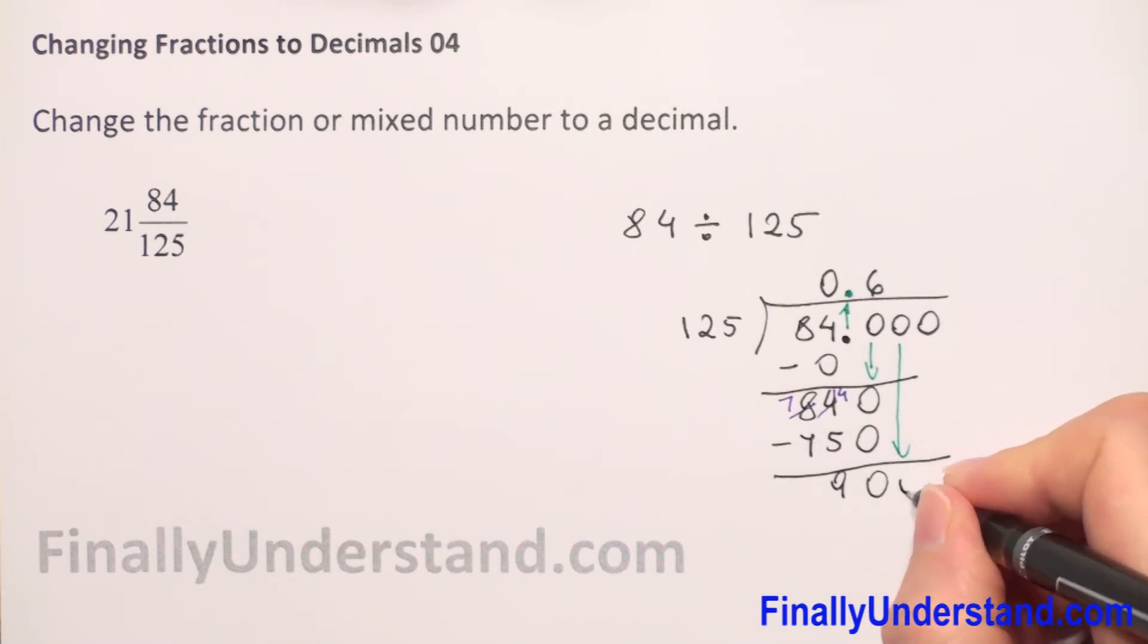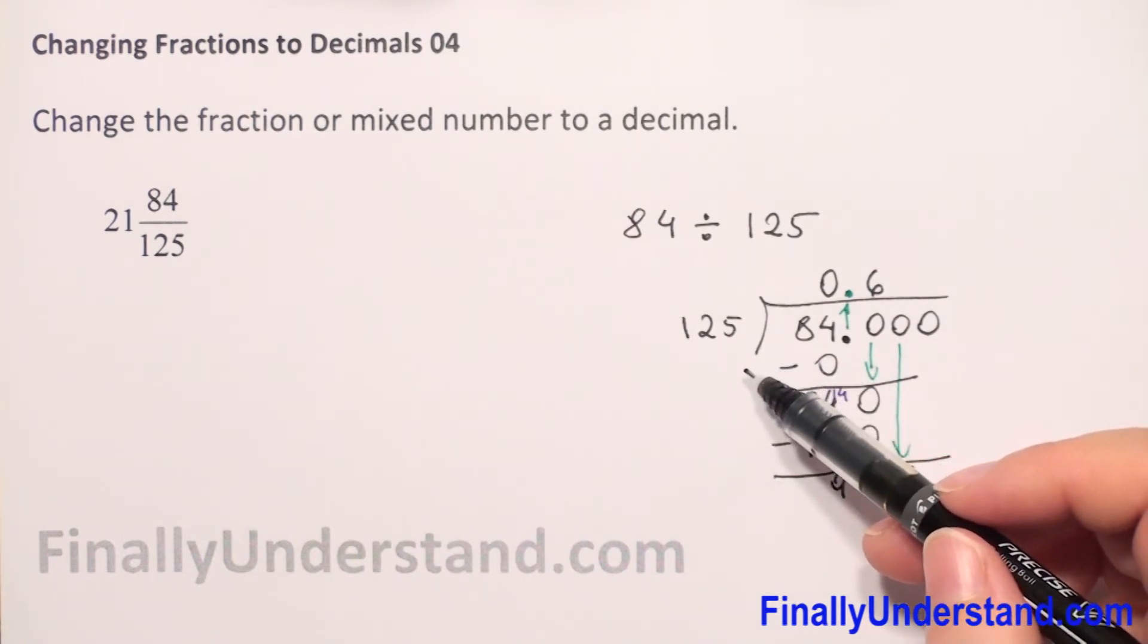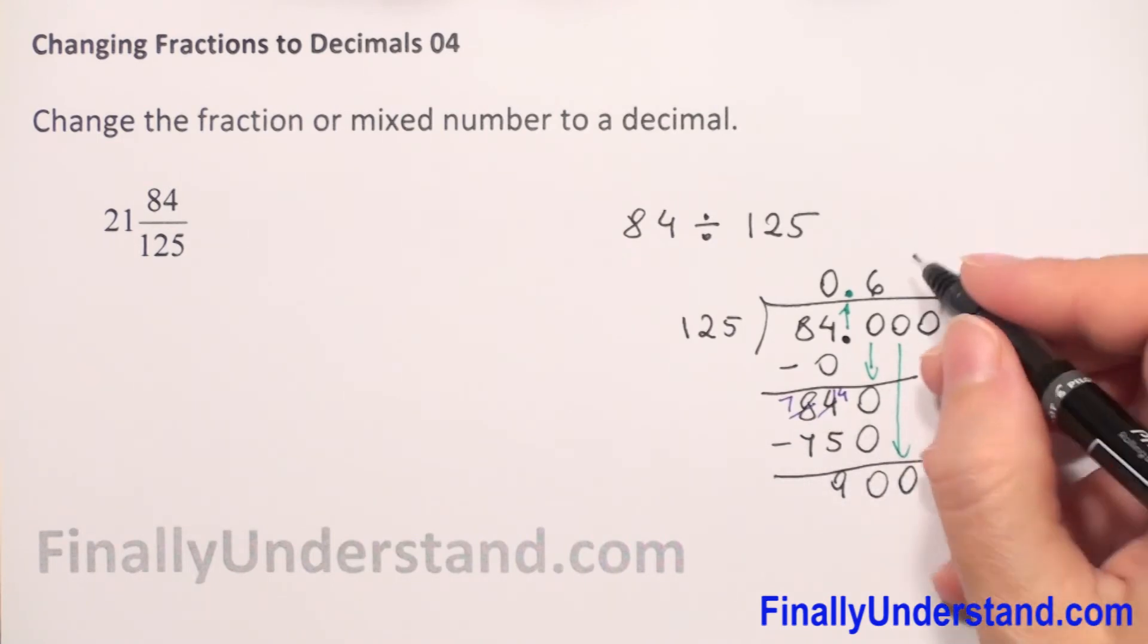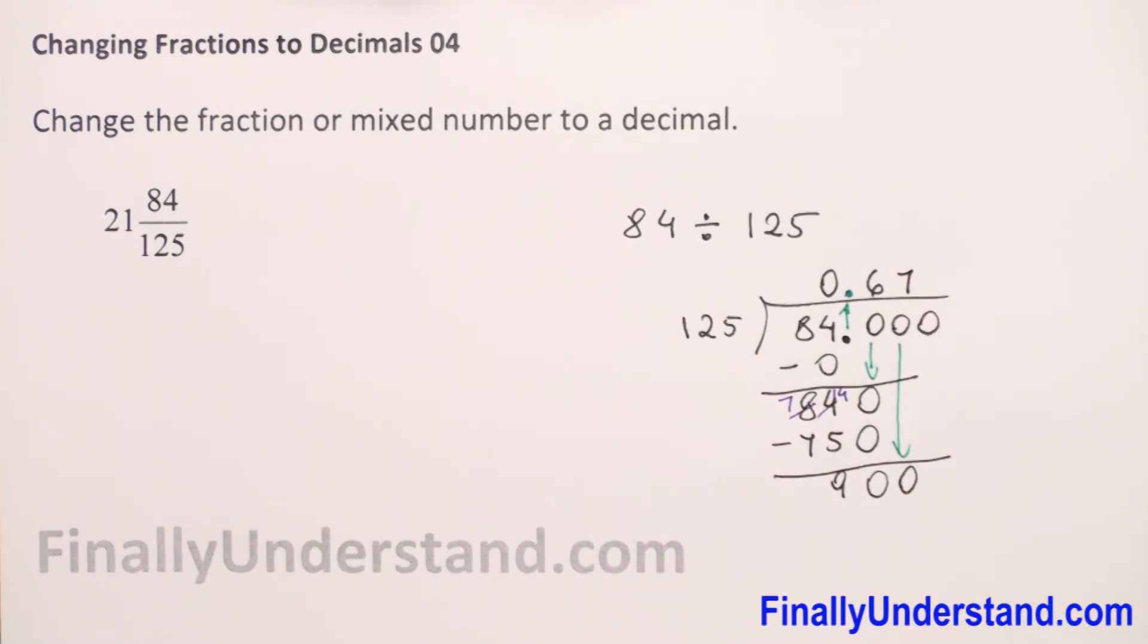So we have 900. 900 divided by 125 will be 7. 7 times 125 is 875, subtraction.